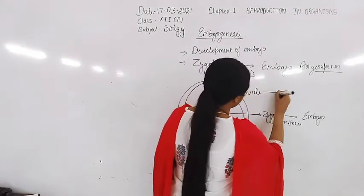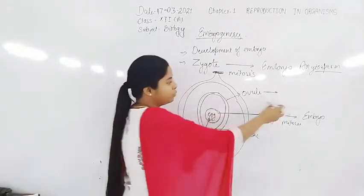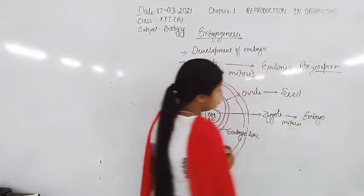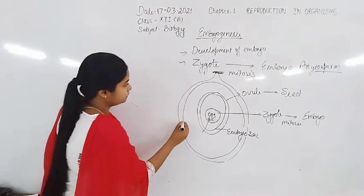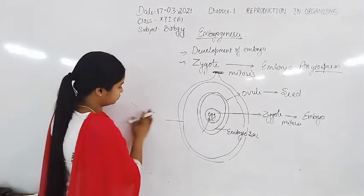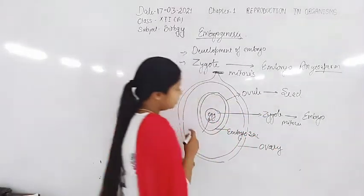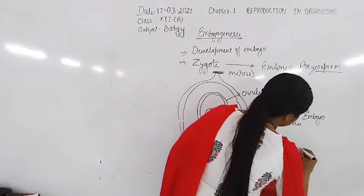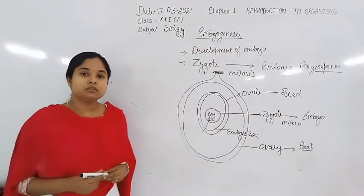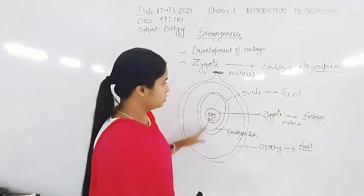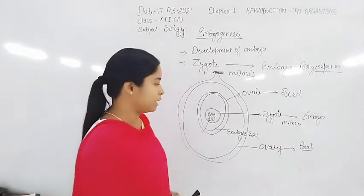The ovule, which covers the egg, is converted — after fertilization — into a seed. The ovary is converted into the fruit. All these conversions take place after fertilization or after syngamy.